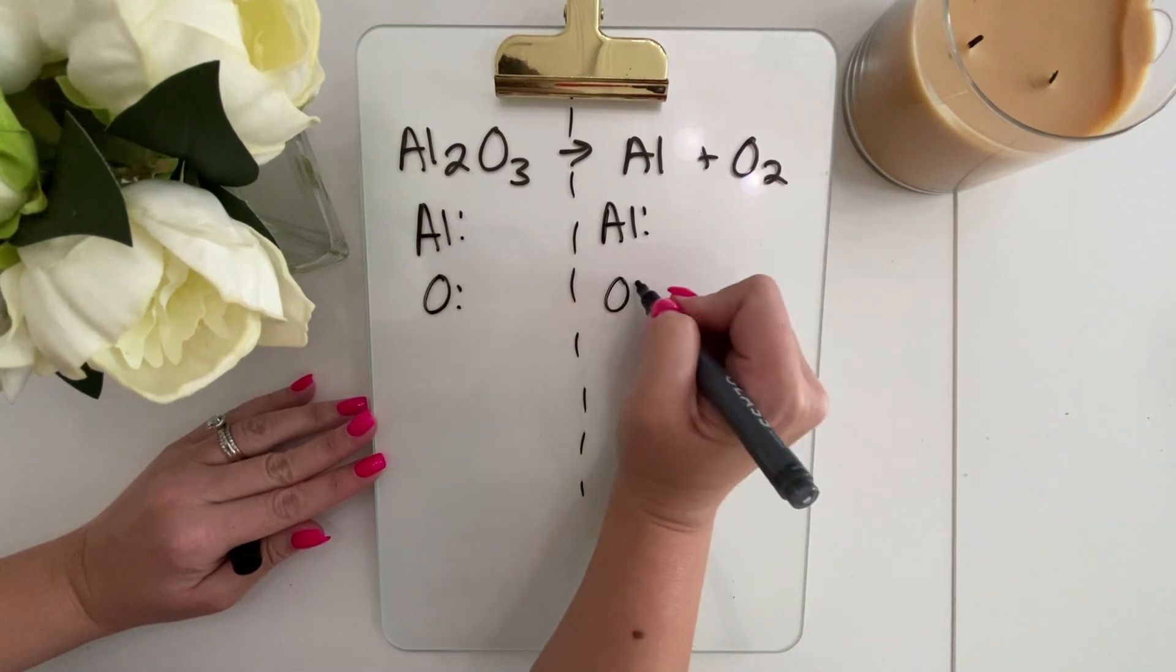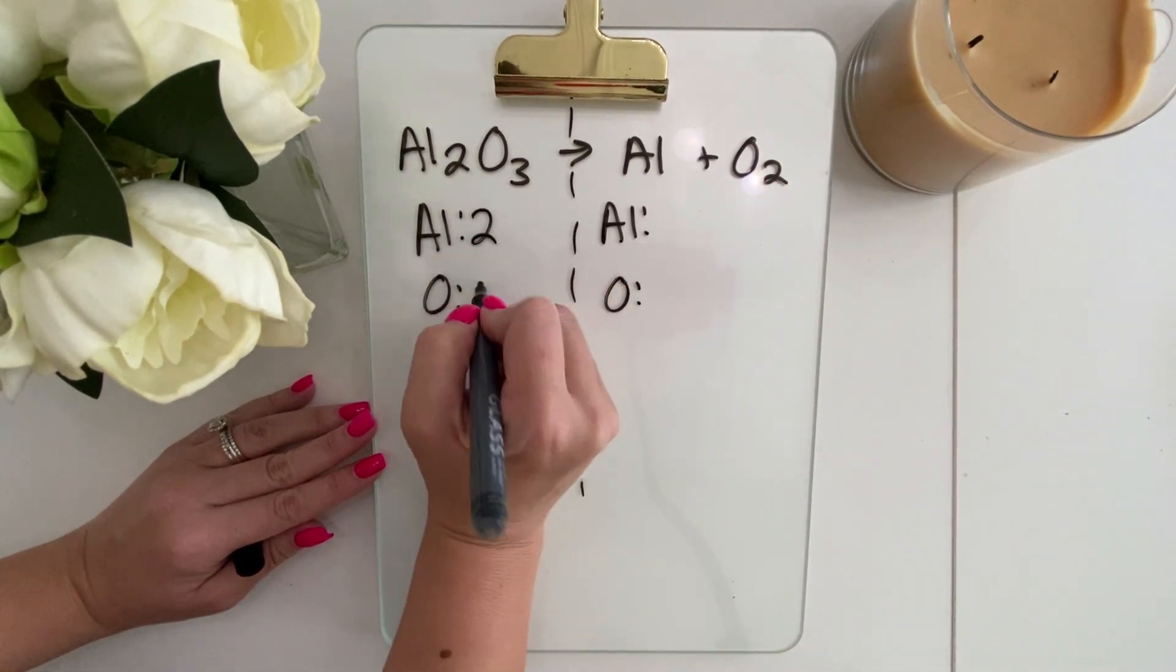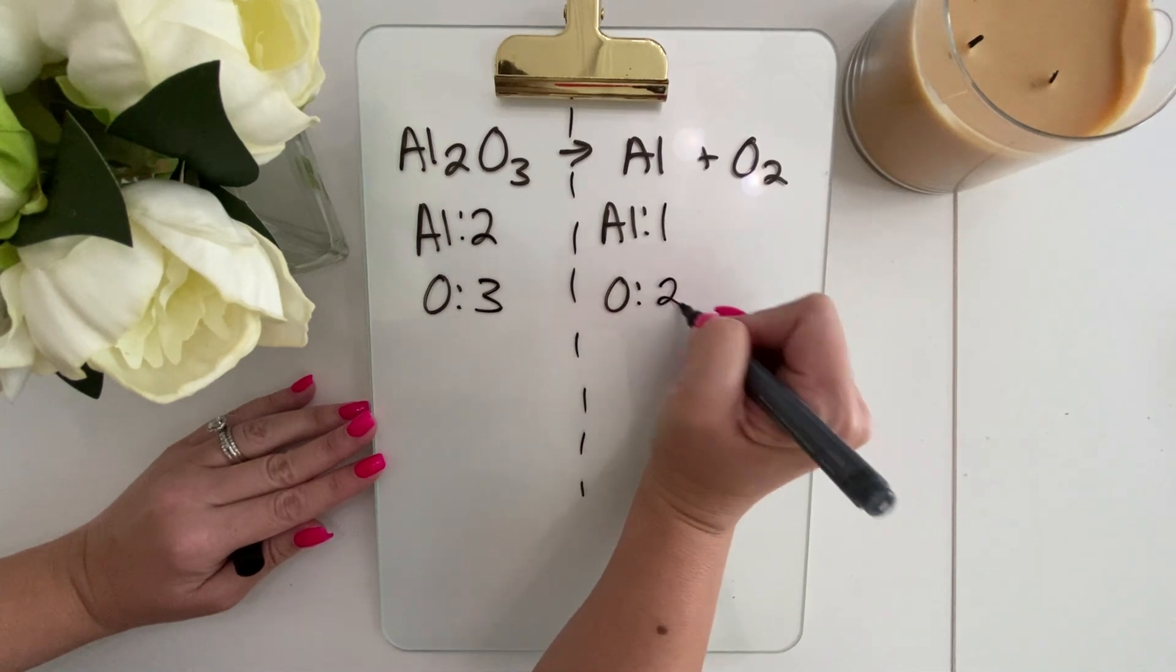We're going to start by listing our elements on both sides. Now let's count up our atoms, and you can see how many we have.